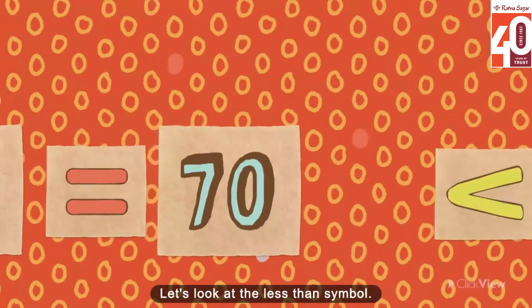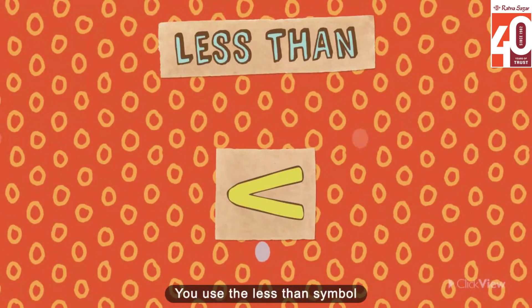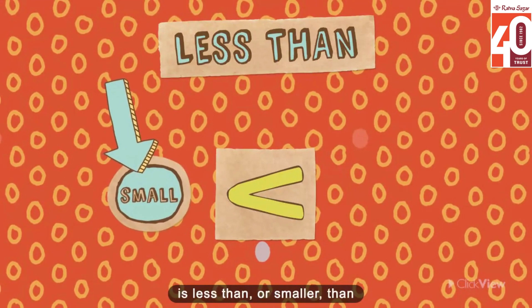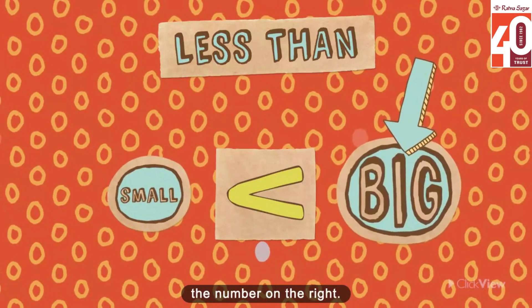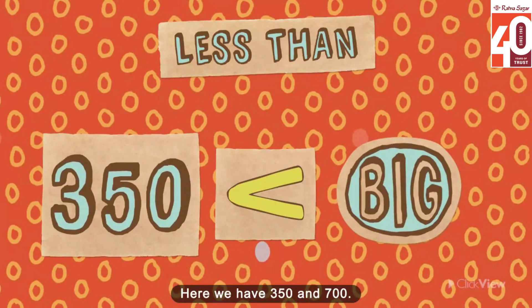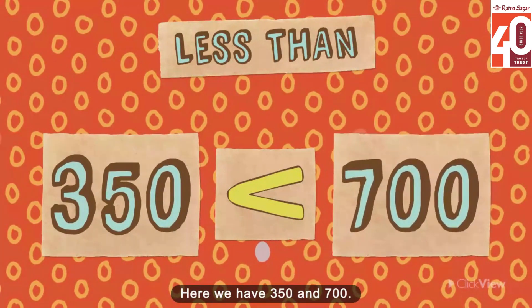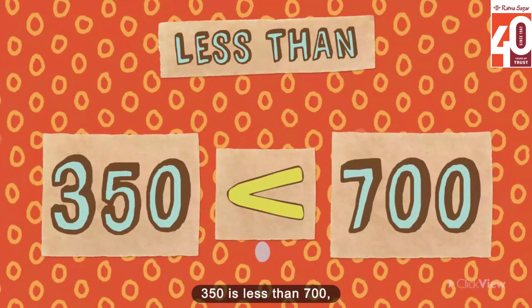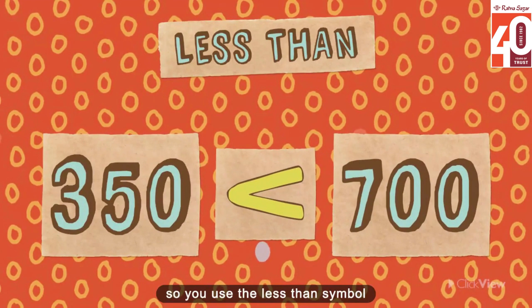Let's look at the less than symbol. You use the less than symbol when the number on the left is less than or smaller than the number on the right. Here we have 350 and 700. 350 is less than 700, so you use the less than symbol to express this relationship.